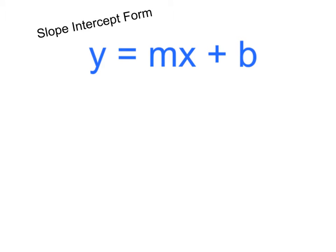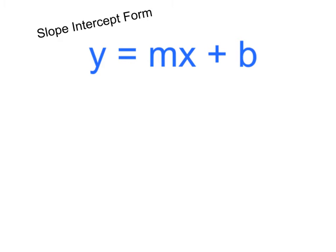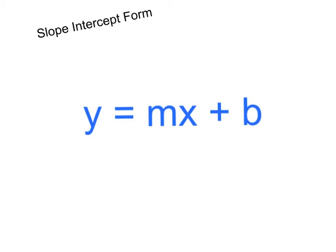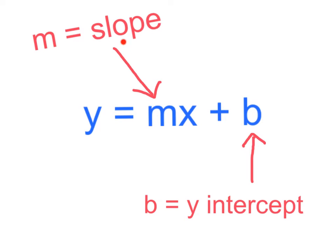You may be asking, what's so great about slope intercept form? And to that I say, what isn't great about slope intercept form? For starters, you're already given your slope, represented by M, and your Y intercept, represented by B.